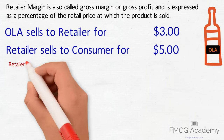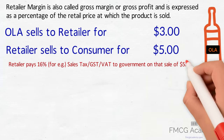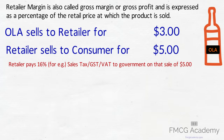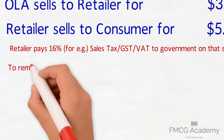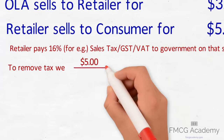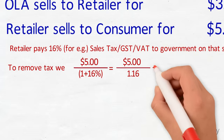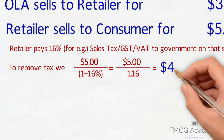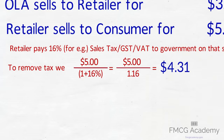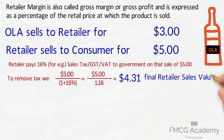On that sale of five dollars, the retailer pays 16 percent sales tax to the government. To remove the tax, we divide five dollars by one plus 16 percent, which is 1.16, to arrive at four dollars and 31 cents — which is what the retailer finally gets from the sale.